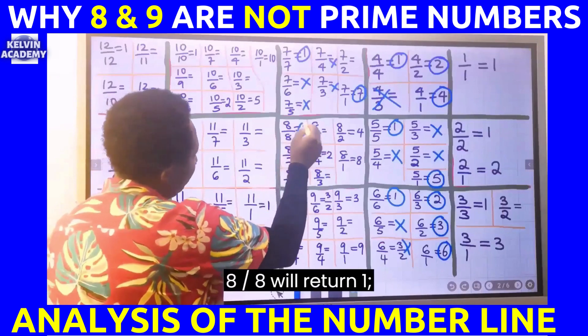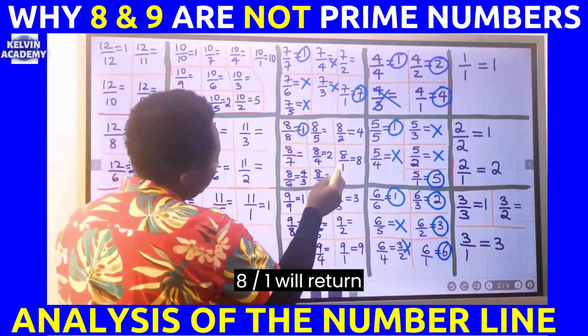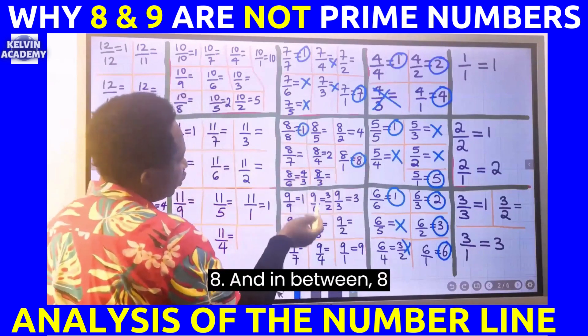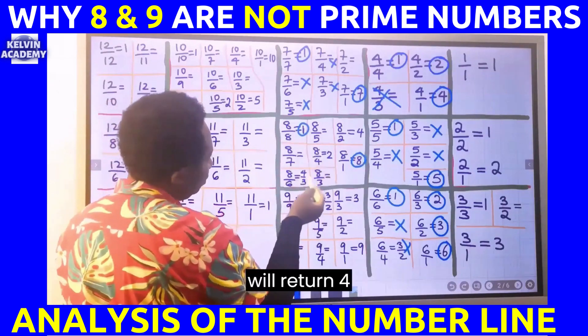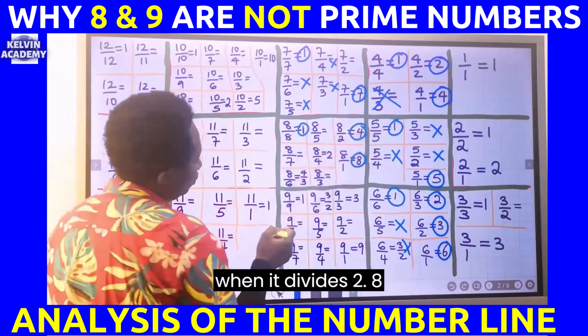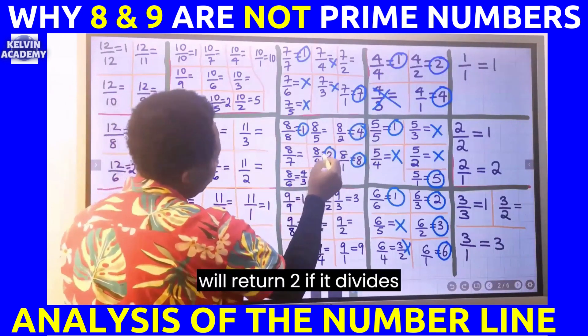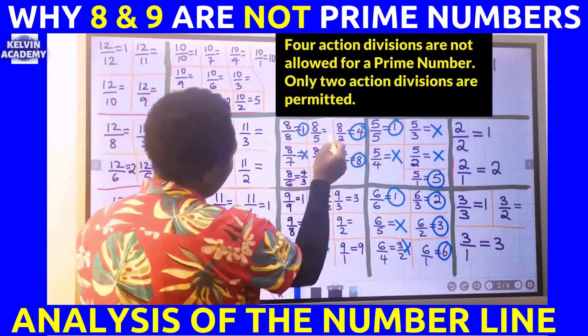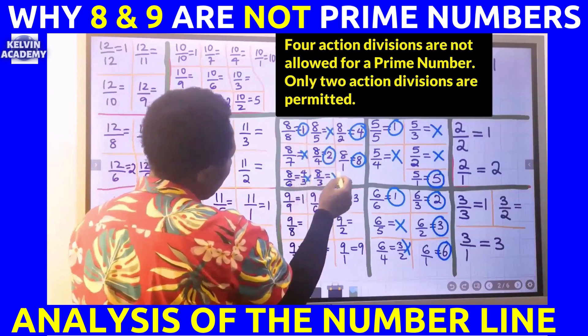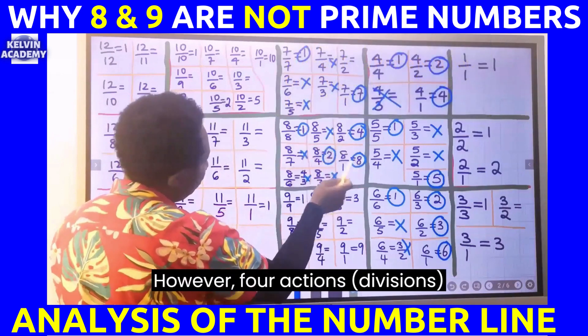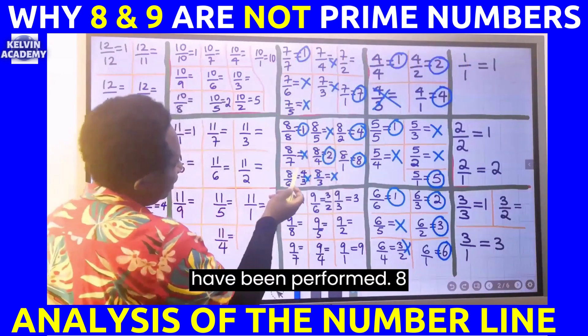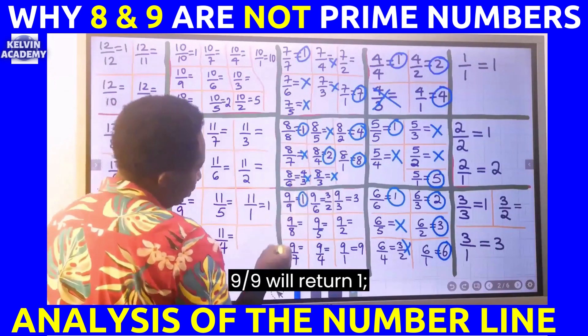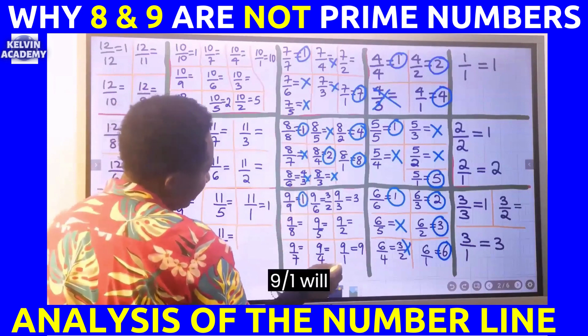Eight divided by eight will return one, eight divided by one will return eight. In between, eight divided by two will return four, and eight divided by four will return two. Every other division results in a fraction. However, four actions have been performed. Eight is not a prime number.